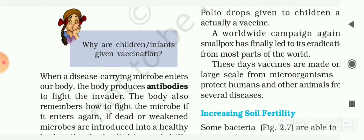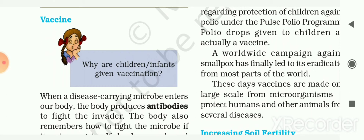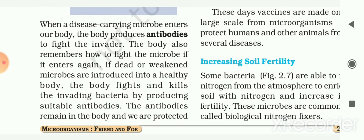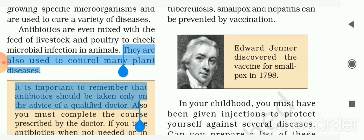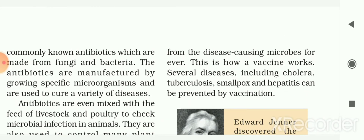Another use is to make vaccines. Have you ever wondered why children or infants are given vaccination? When disease-carrying microbes enter our body, the body produces antibodies to fight the invader. The body also remembers how to fight the microbes if they enter again. If dead or weakened microbes are introduced into a healthy body, the body fights and kills them by producing suitable antibodies. The antibodies remain in the body and we are protected from disease-causing microbes for a lifetime. This is how vaccines work. Several diseases including cholera, tuberculosis, smallpox, and hepatitis can be prevented by vaccination.